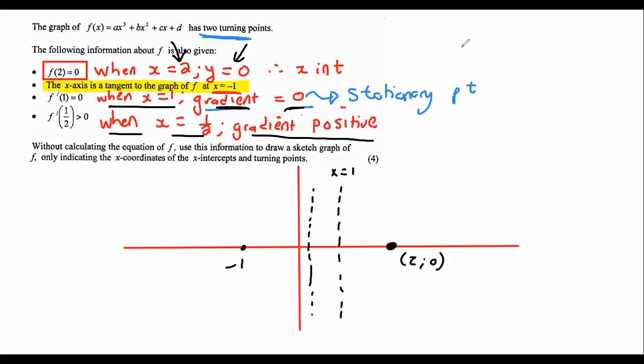So the gradient must be positive when x is 1/2. So what does a positive gradient mean? It means that it goes up like that.